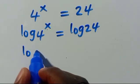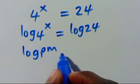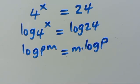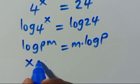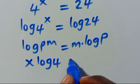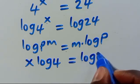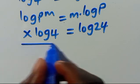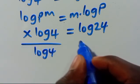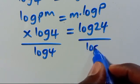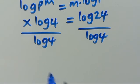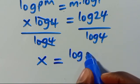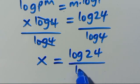Recalling the log power rule: log of 4 to the power of m equals m multiplied by log of the base. So here we have x times log 4 equals log 24. We can then divide both sides by log 4, giving us x equals log 24 over log 4.